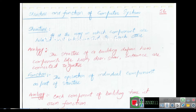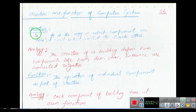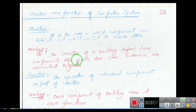We can view a computer system with respect to a function and with respect to the structure. By definition, structure is the way in which components are interrelated or interconnected to each other. For example, if we talk about a building, we define how rooms, doors, entrance, exit, and stairs are linked together — this defines the structure of a building. Similarly, we define a computer's structure by how the components are connected, how the data movement facility is connected, how data control is associated, and how the storage facility is associated with the computer.